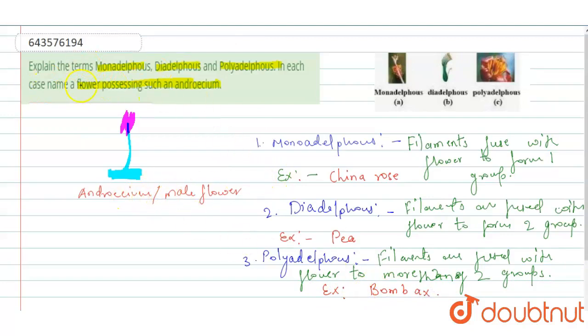So the terms monadelphous, diadelphous, and polyadelphous are types of stamen. Examples are China rose, pea, and Bombax plant. Hope this is clear.